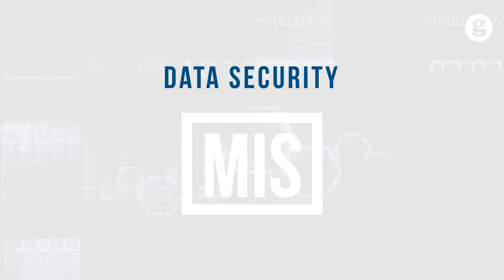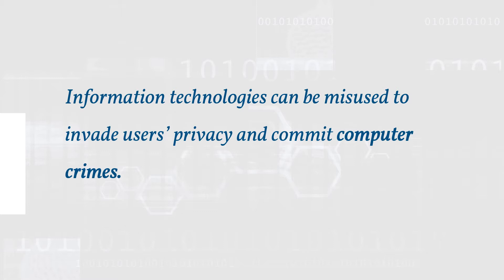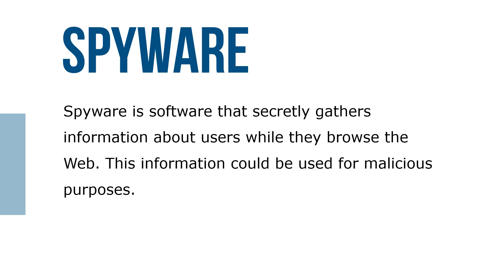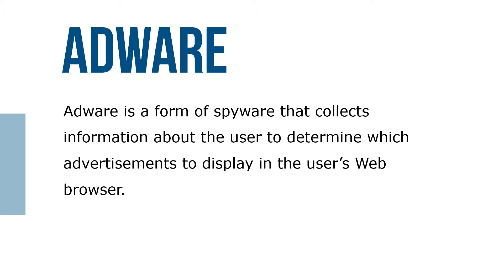Let's take a look at information technology risks. Information technologies can be misused to invade users' privacy and commit computer crimes. The costs include stolen identities, intellectual property and trade secrets, as well as the damage done to companies and individuals' reputations. Spyware is software that secretly gathers information about users while they browse the web, and this information could be used for malicious purposes. Adware is a form of spyware that collects information about the user to determine which advertisements to display in the user's web browser.